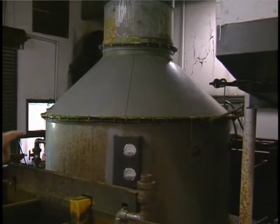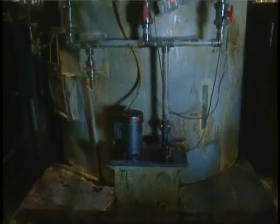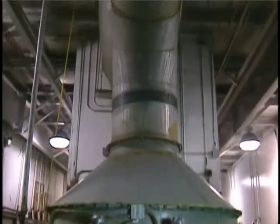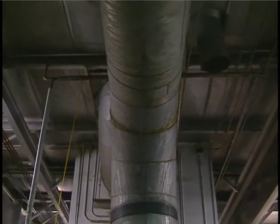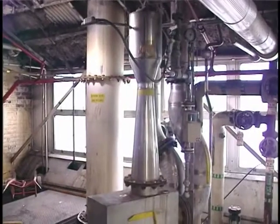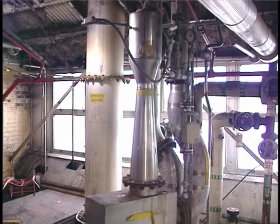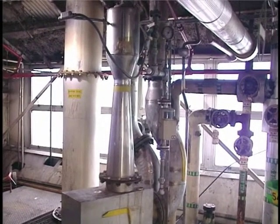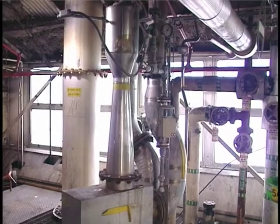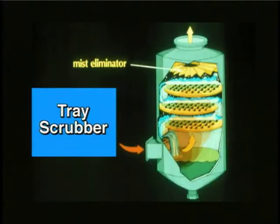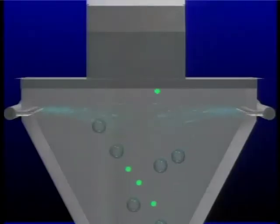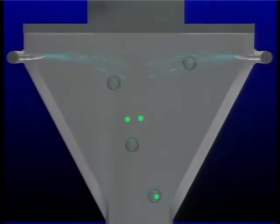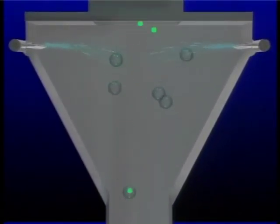Changes in scrubber pressure drop can occur for several reasons. Increased pressure drop across a packed bed or tray scrubber may indicate plugging of the bed or trays. Increased pressure drop on a venturi scrubber may be caused by increased liquid flow rate or by adjusting a variable throat damper to a more closed position. A decrease in the pressure drop across a tray scrubber may indicate warped or collapsed trays, while for a venturi scrubber it may be caused by decreased liquid flow rate or by adjusting a variable throat damper to a more open position.